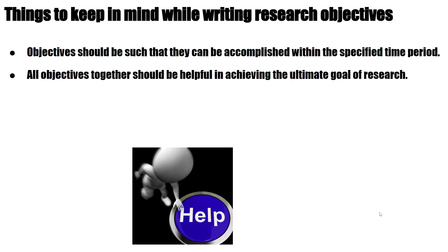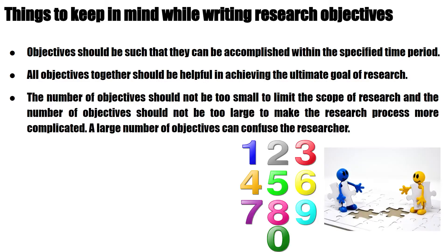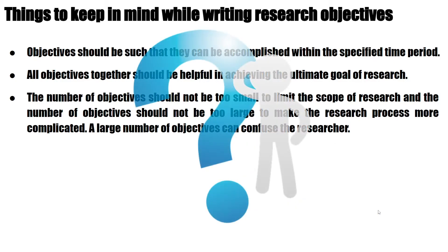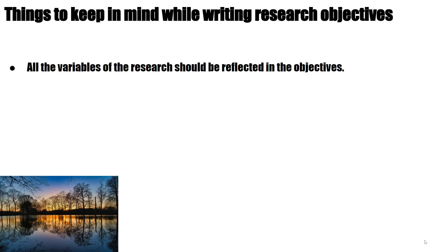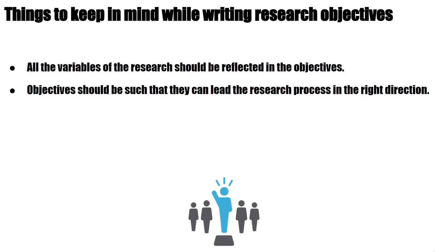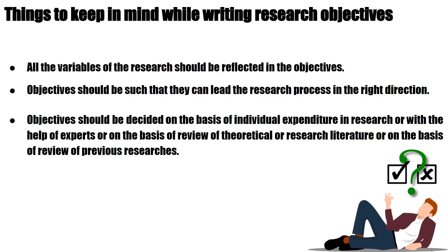Objectives should be such that they can be accomplished within the specified time period. All objectives together should be helpful in achieving the ultimate goal of research. The number of objectives should not be too small to limit the scope of research, and should not be too large to make the research process more complicated, as a large number of objectives can confuse the researcher. All the variables of the research should be reflected in the objectives. Objectives should lead the research process in the right direction, and should be decided on the basis of individual expenditure, expert guidance, or review of theoretical and previous research literature.